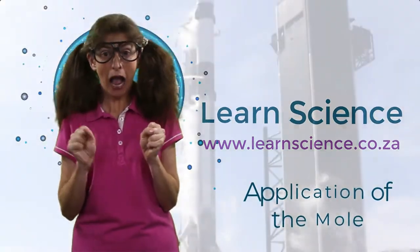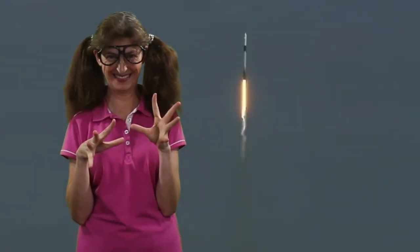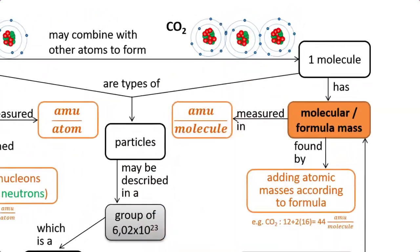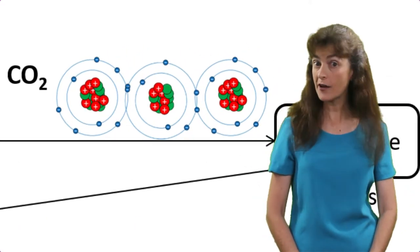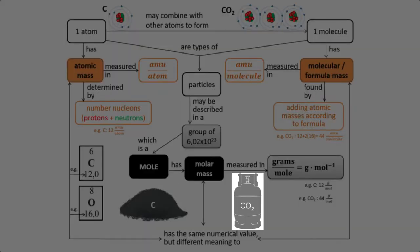I want to understand how the mole helps us plan our rocket launch. But first, let's apply what we learned in the previous movie to compounds. We only used examples of elements before. Does the mole also work with compounds? It does, indeed. So let's take carbon dioxide as an example. What do you know about a molecule of carbon dioxide, and what do you know about a mole of carbon dioxide molecules?